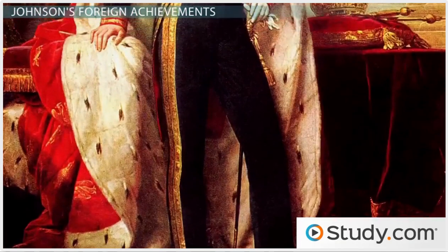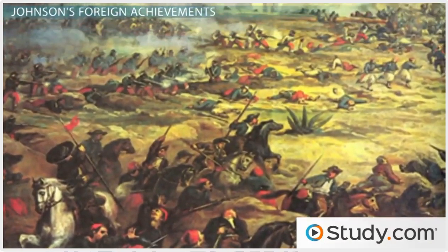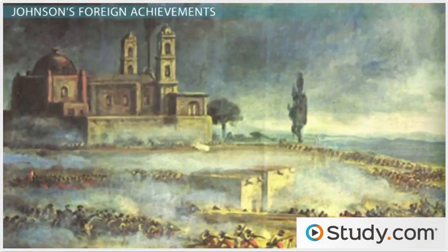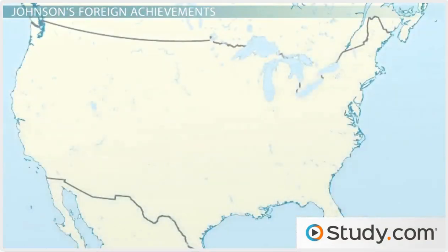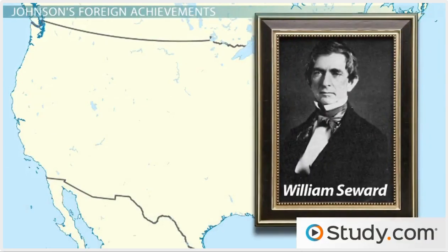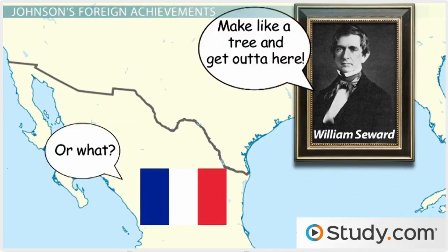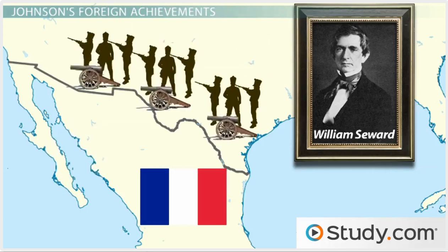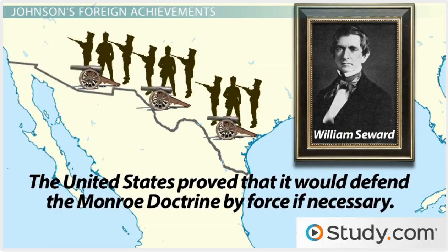The French president appointed an emperor, Archduke Maximilian I, to take control. On May 5th, 1862, Mexican forces won an unlikely victory over the French, spawning the famous celebration of Cinco de Mayo. The war dragged on, and as soon as the American Civil War ended in 1865, Johnson's very capable Secretary of State, William Seward — who survived an assassination attempt the same night Lincoln was shot — demanded that France withdraw its forces. He sent 50,000 U.S. Army veterans to the border to show he meant business. France agreed to leave, and evacuated all forces by 1867. Maximilian was executed by a firing squad, and the United States proved that it would defend the Monroe Doctrine by force if necessary.